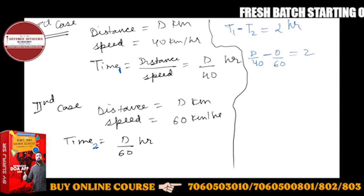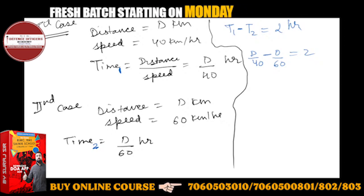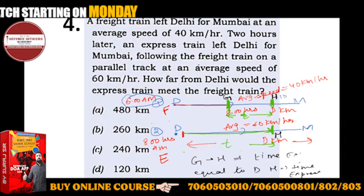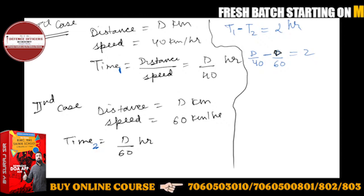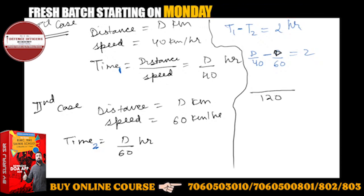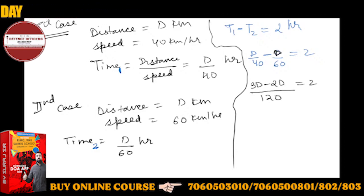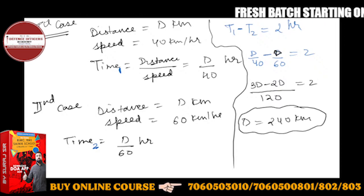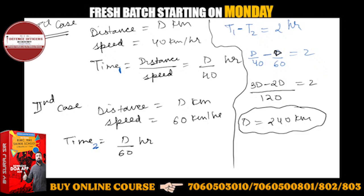So the hint is: D/40 minus D/60 equals 2. You can directly substitute the options, or solve algebraically. The LCM of 40 and 60 is 120. So we get 3D minus 2D over 120 equals 2, which gives D equals 240 kilometers. After 240 kilometers, the express train catches the freight train.